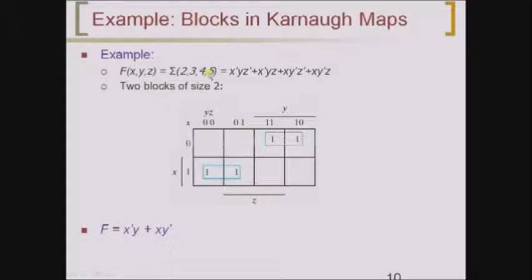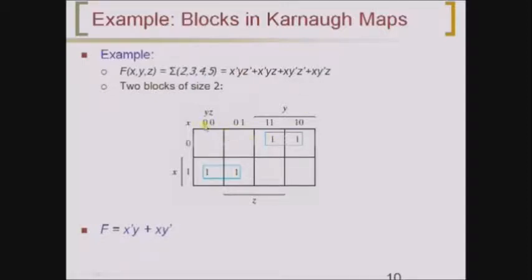Plot minterms M2, M3, M4 and M5 on the K-map. Now group the adjacent cells: M2 is adjacent to M3 and M4 is adjacent to M5. This gives two blocks of size 2. For the first block, x is constant at 0, y is constant at 1, and z changes from 1 to 0, so the resultant term is x-bar·y. For the second block, x is constant at 1 and y is constant at 0, so the resultant term is x·y-bar. The final simplified expression is x-bar·y + x·y-bar.